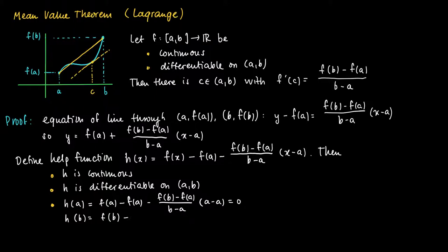Now what happens if we plug in b? We obtain f(b) minus f(a) minus f(b) minus f(a) divided by b minus a, times b minus a. The numerator and denominator cancel, so we have f(b) minus f(a) and we subtract f(b) minus f(a), which equals 0. So h(b) equals 0.